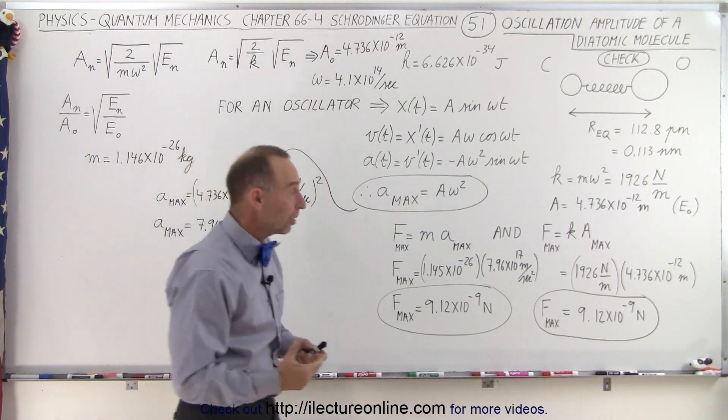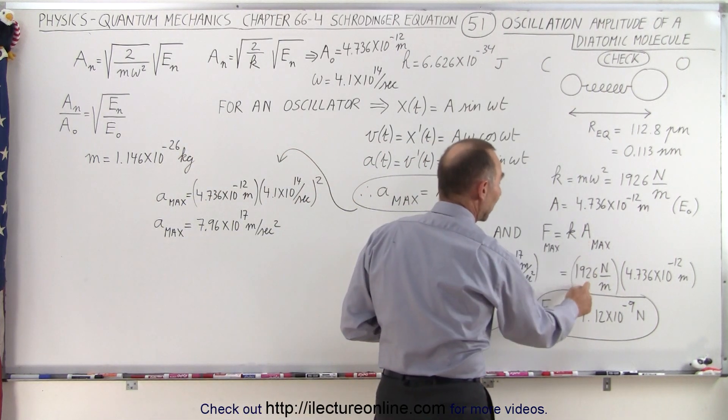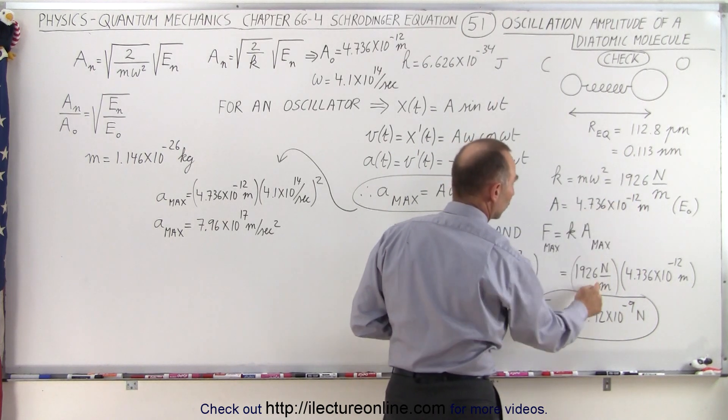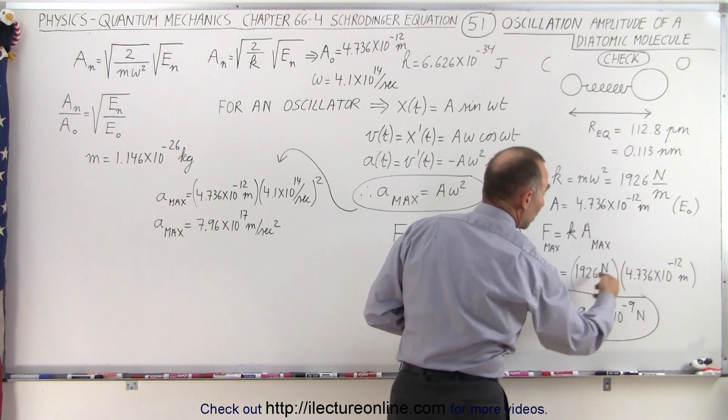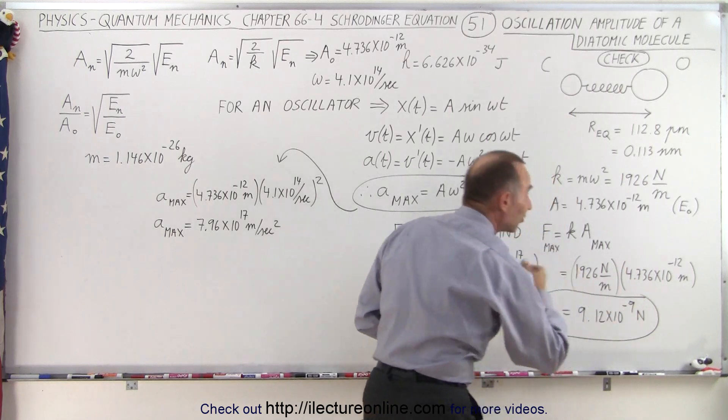Now if we use the spring constant times the amplitude, we get the spring constant of 19.26 newtons per meter, the maximum amplitude, when we multiply that, we get the very same result.